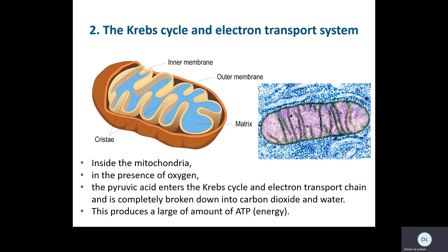Here's a picture of what a mitochondrion looks like. It has an outer membrane and an inner membrane, and that inner membrane is folded inwards. The more foldings the mitochondrion has, the more energy it can produce. The Krebs cycle happens first, in the liquidy part of the mitochondrion called the matrix. Then electrons from the Krebs cycle go into the electron transport system, which is located on the foldings called the cristae of the mitochondrion.